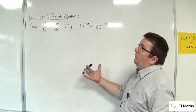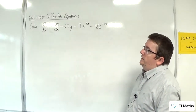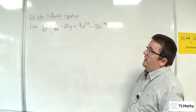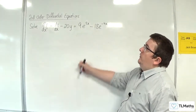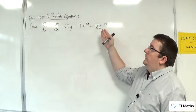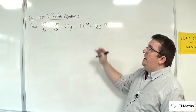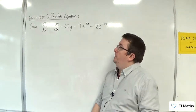In this video, I'm going to solve d²y/dx² take away dy/dx take away 20y is equal to 9e^(5x) take away 18e^(-4x).